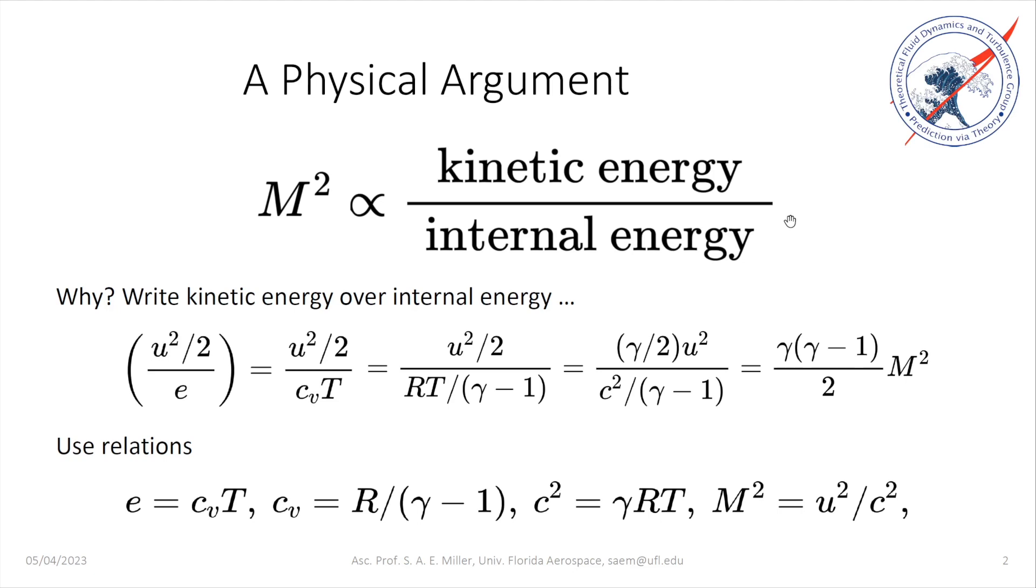And you might say, well why is this the case? How can we write this equation? Well, we can go over here on the left and write U squared, that's the velocity squared divided by 2, which is a kinetic energy, and divide it by the internal energy E. That's what we have proposed in this proportionality. So we have kinetic energy divided by internal energy.